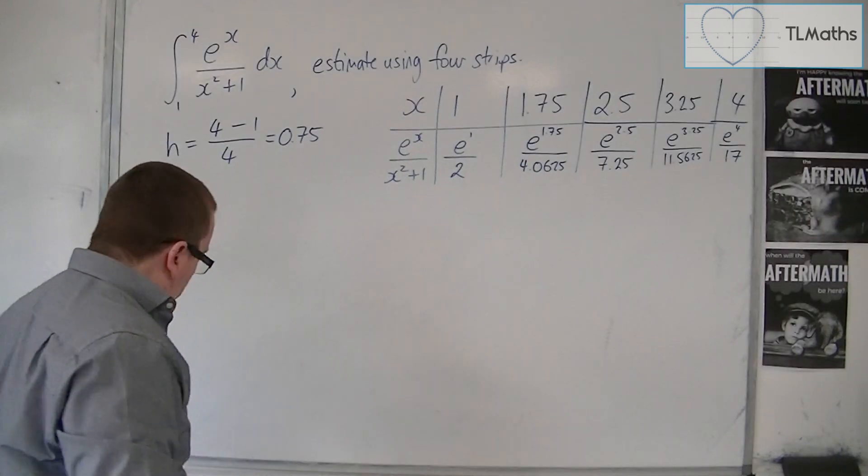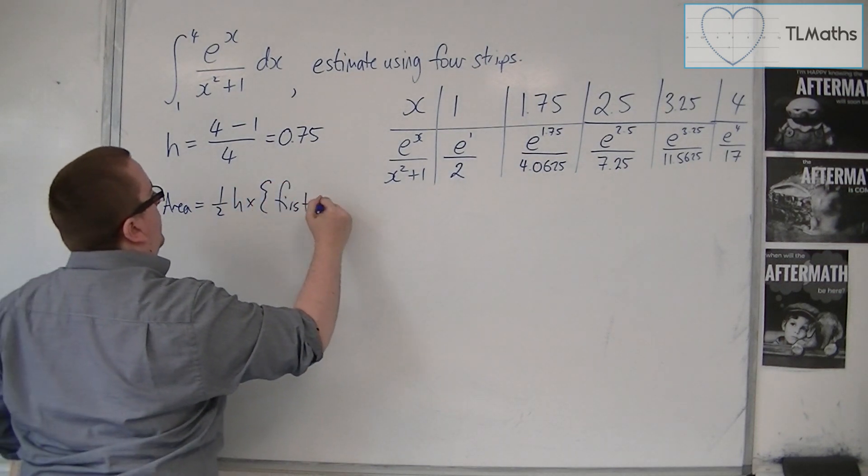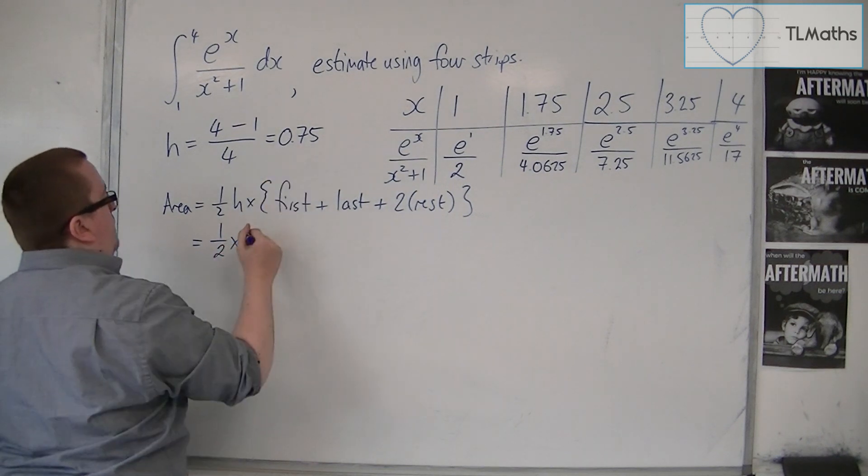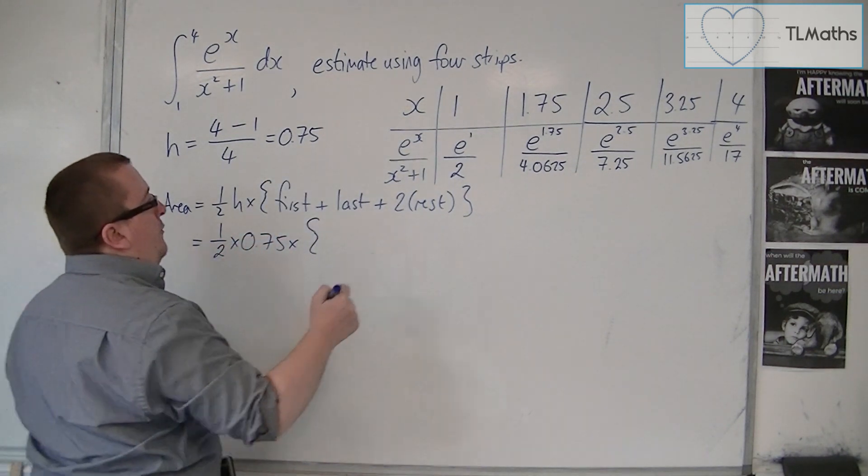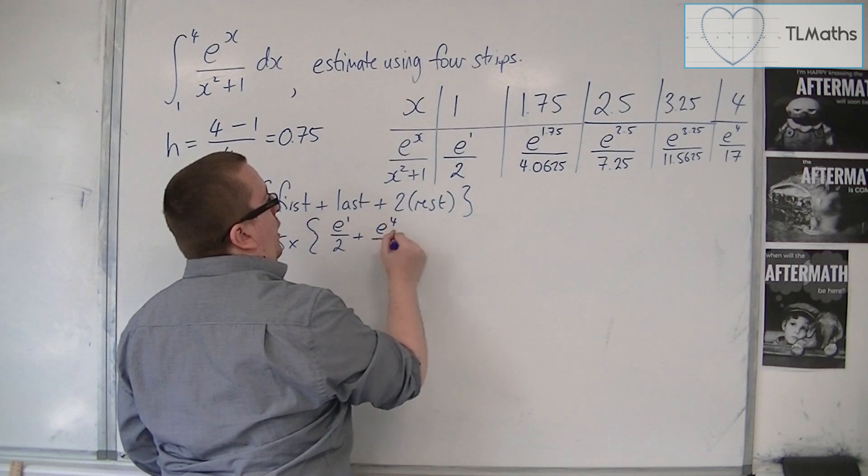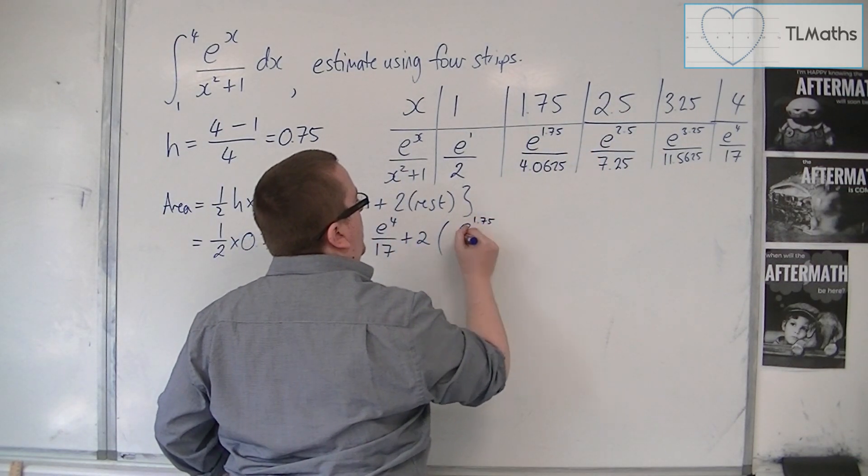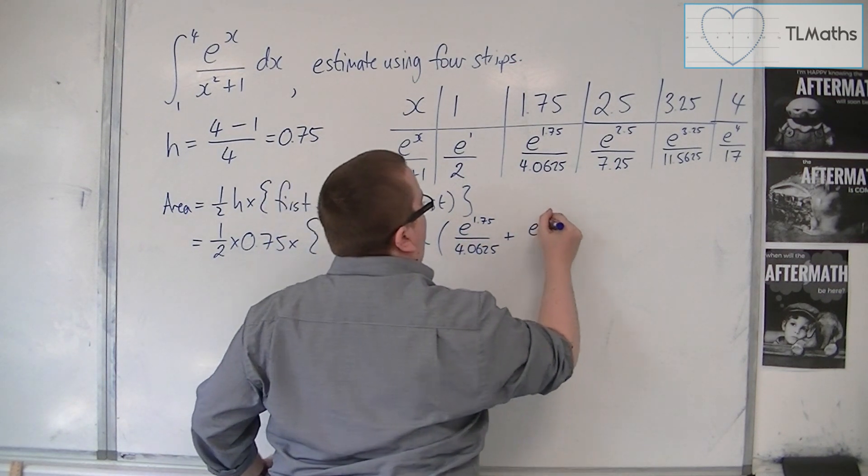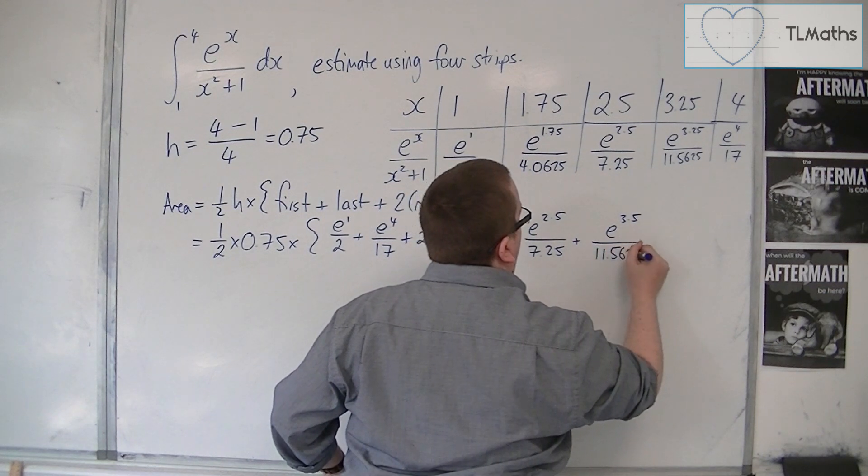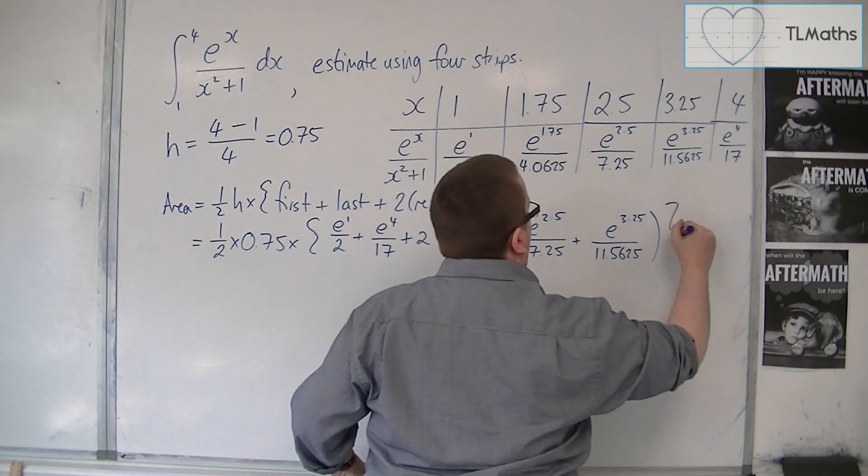So then I can put them into the formula. Now the formula is 1.5 h times the first plus the last plus 2 lots of the rest. So we've got 1.5 times h, 0.75 times, we've got the first, which is this e to the 1 over 2, plus the last, which is e to the 4 over 17, plus 2 lots of the rest. So this one plus this one plus this one, e to the 1.75 over 4.0625, plus e to the 2.5 over 7.25, plus e to the 3.5 over 11.5625.